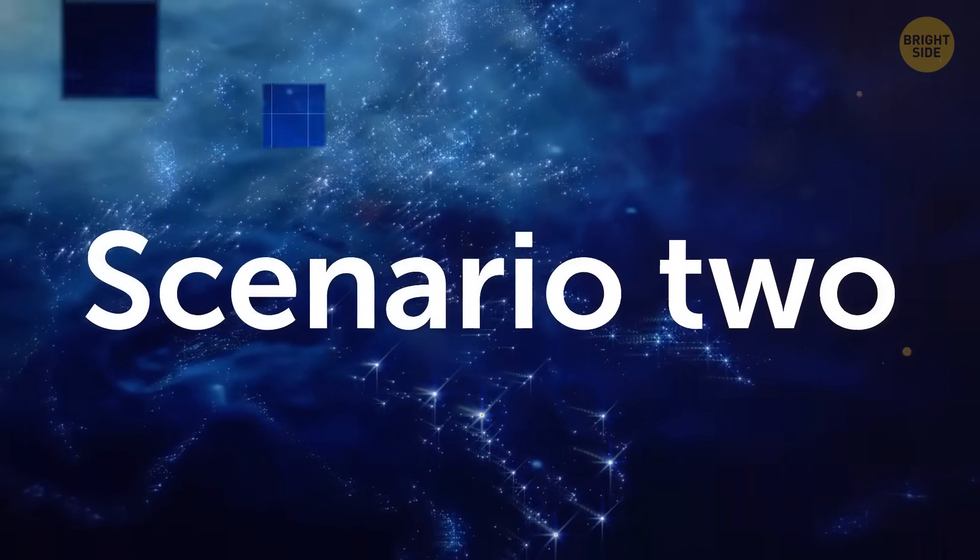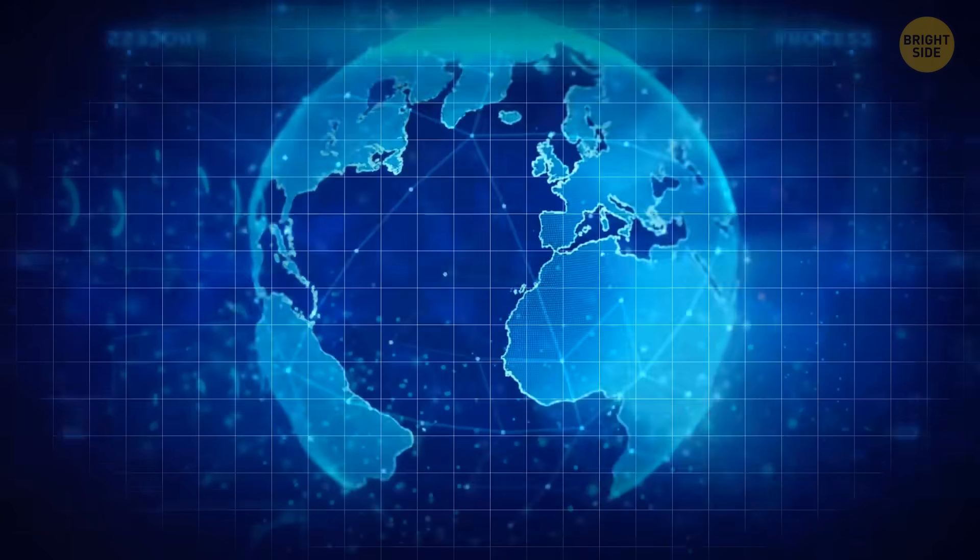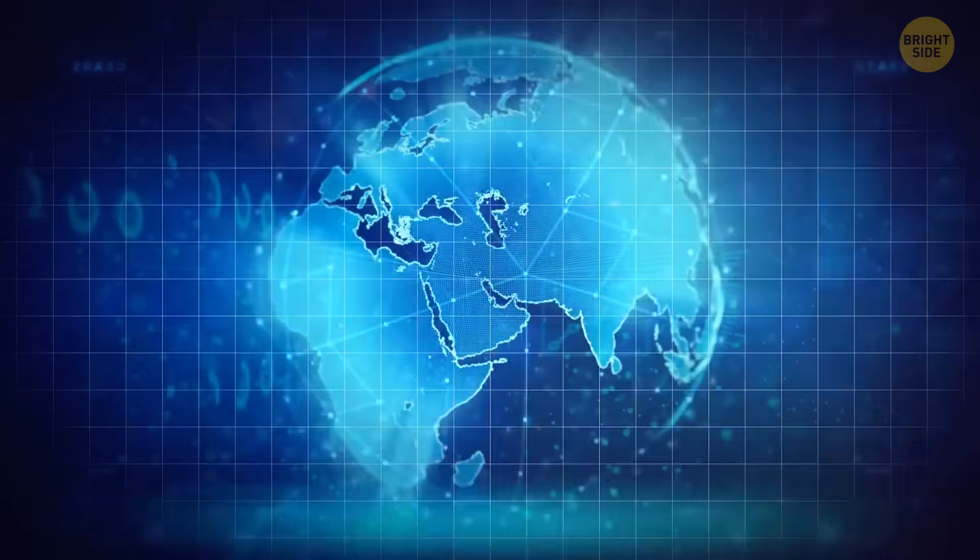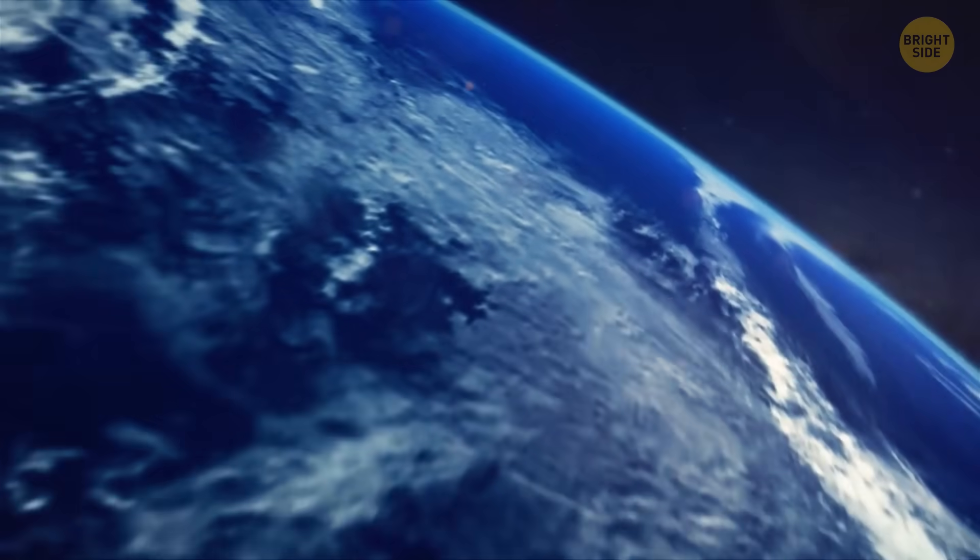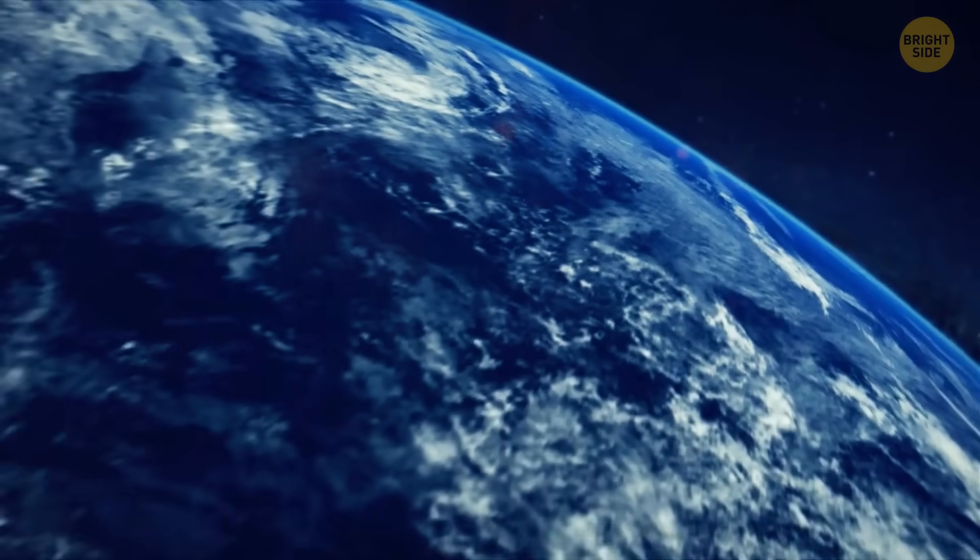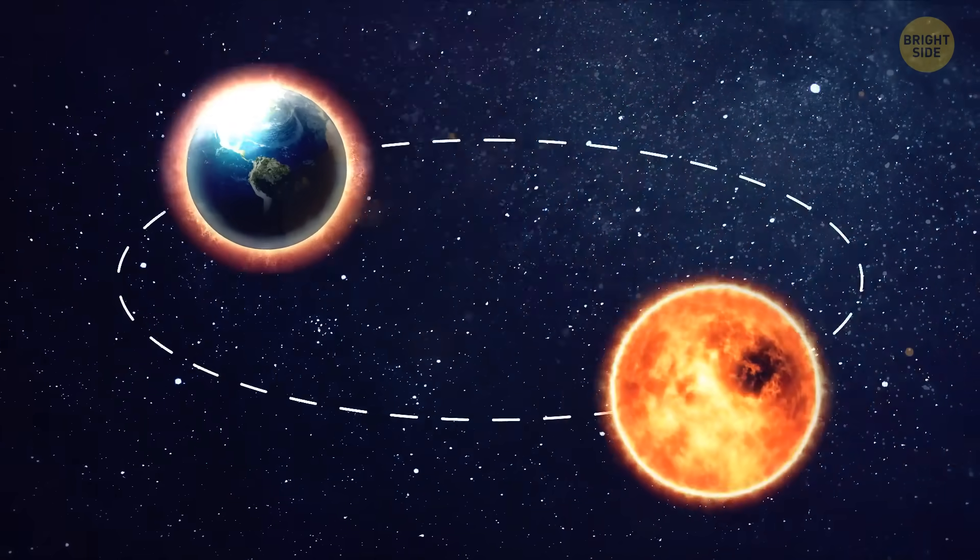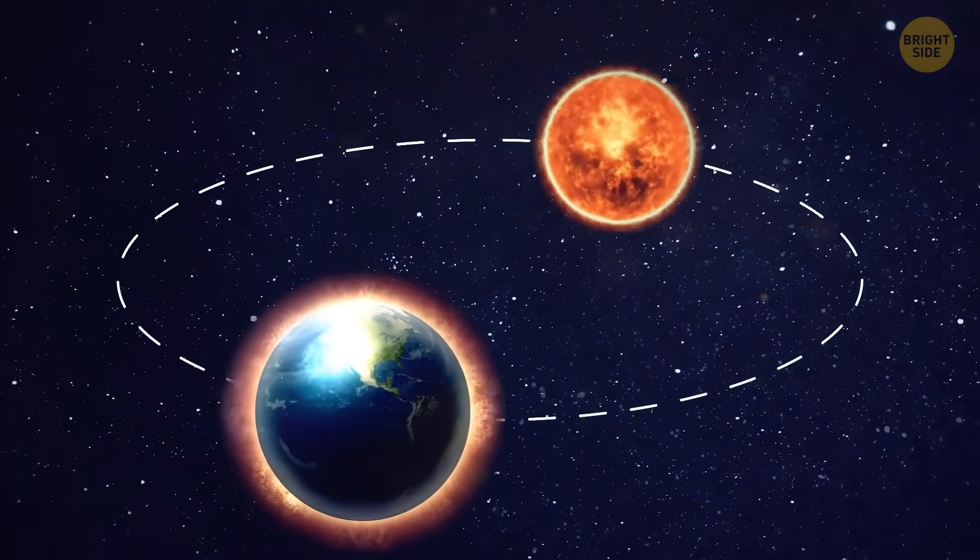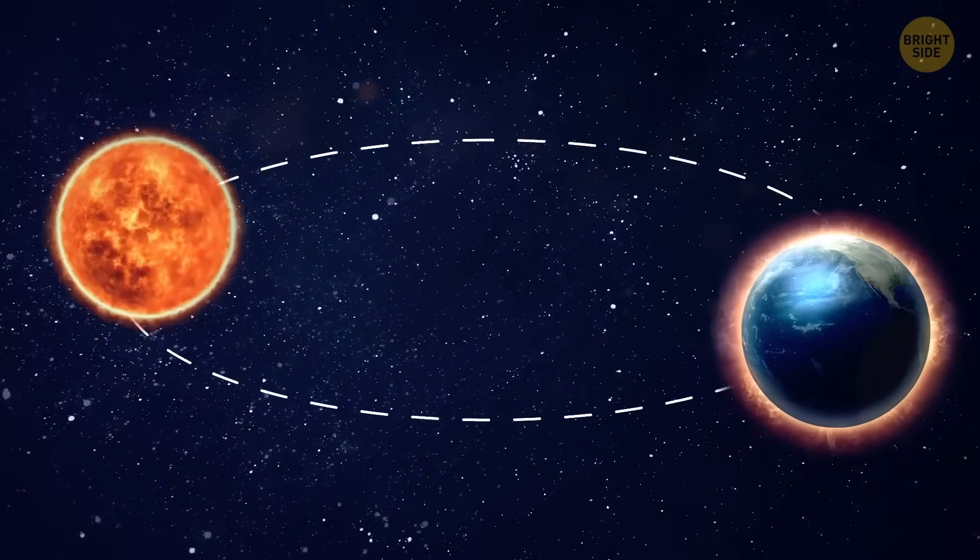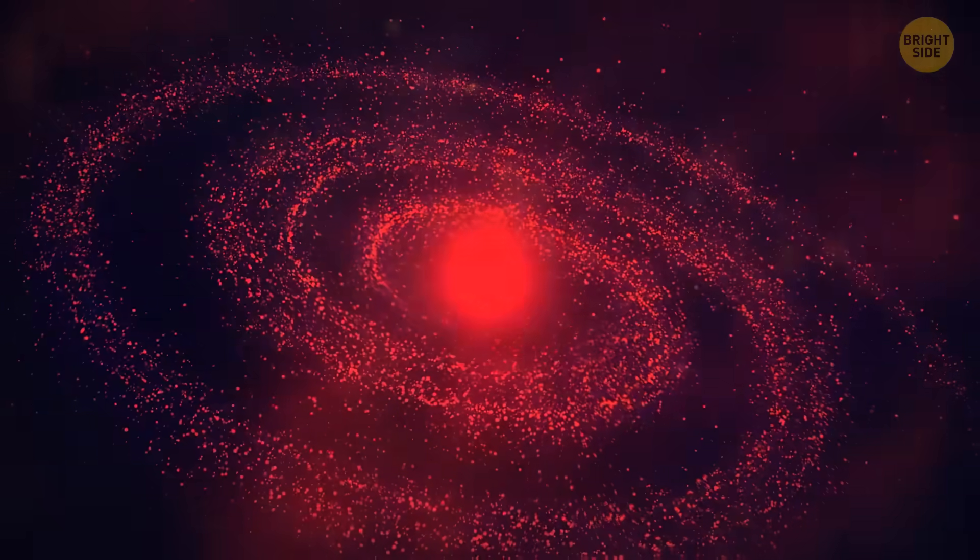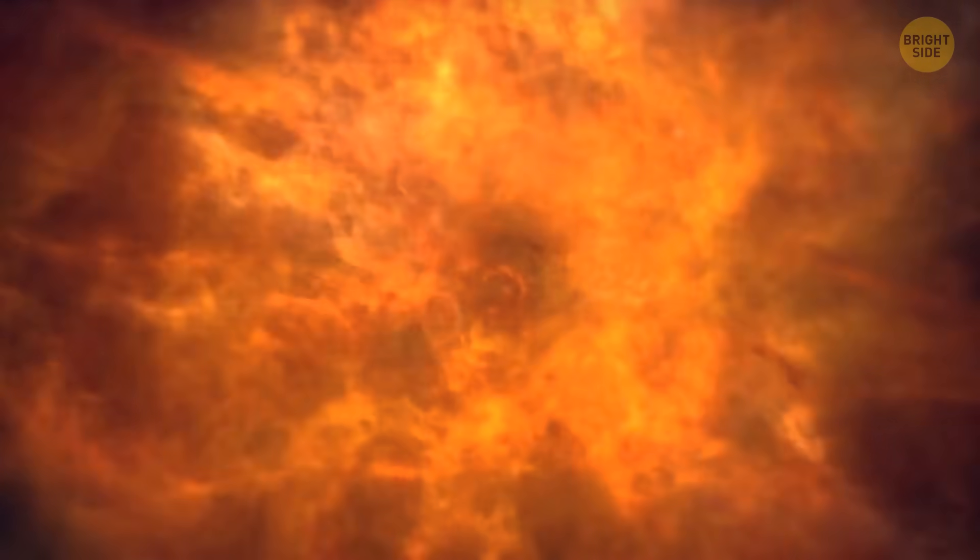Scenario 2: This works both as a separate scenario and as a result of the previous one. The Earth becomes as large as the sun and gets its mass. Now we have two suns! We become a binary star system. You know what that means. It's time to destroy our entire solar system.